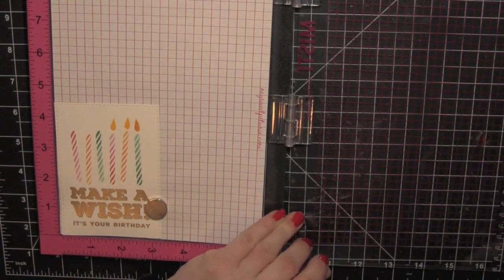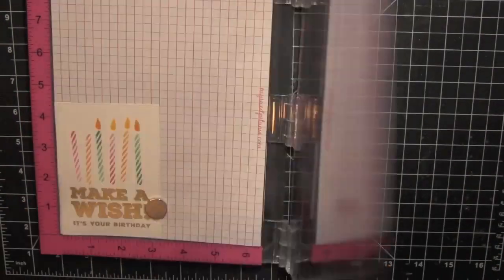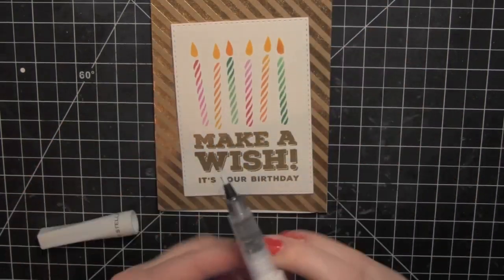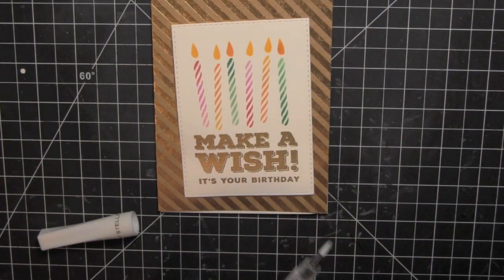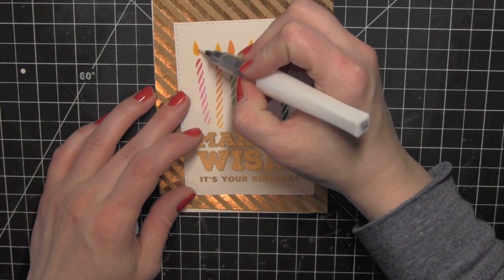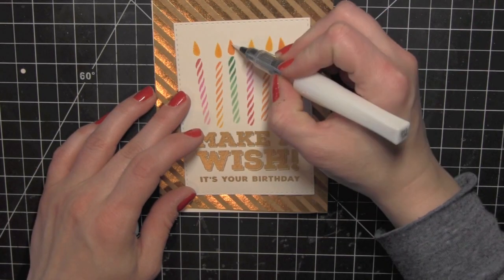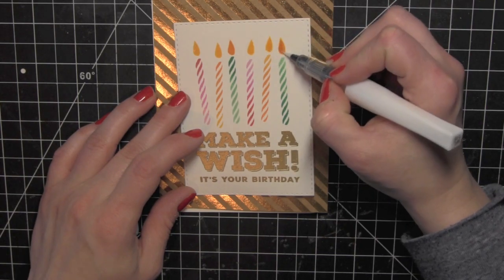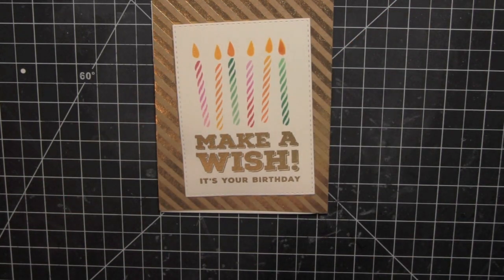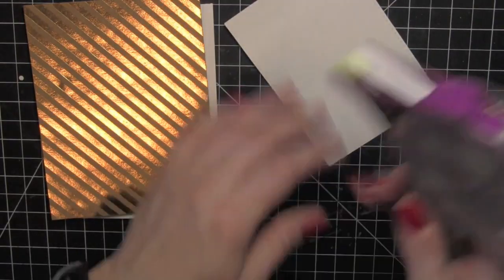I did die cut my panel there with the stitched rectangle from the Simon Says Stamp die collection. I did that before I stamped everything. That's just from some of the cardstock in the April kit. Then I took the clear Wink of Stella glitter pen over the little flames there on the candles.